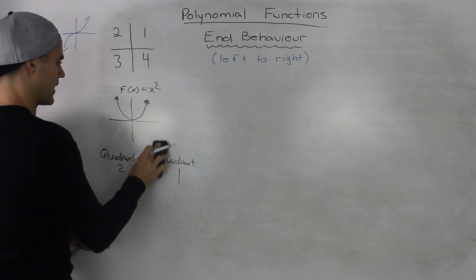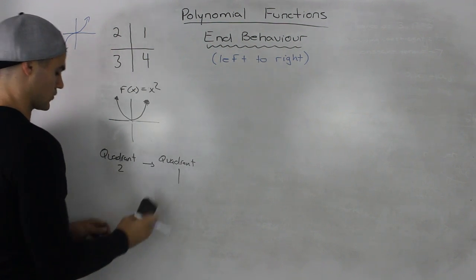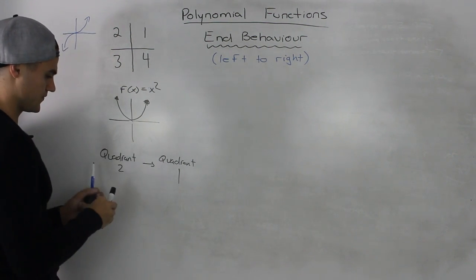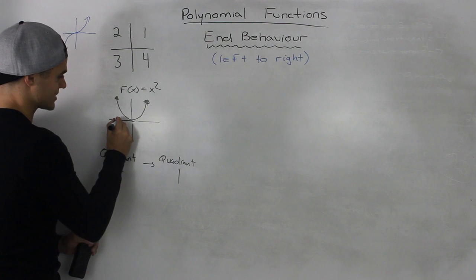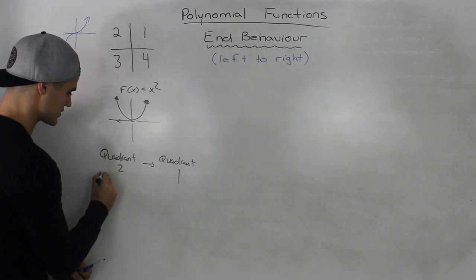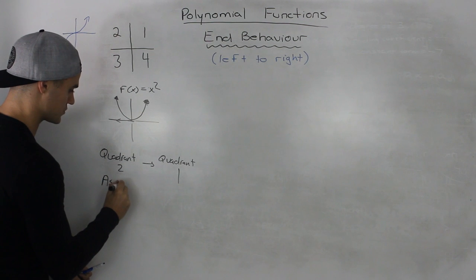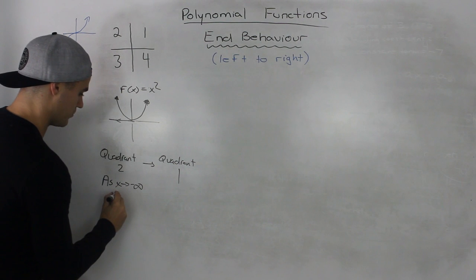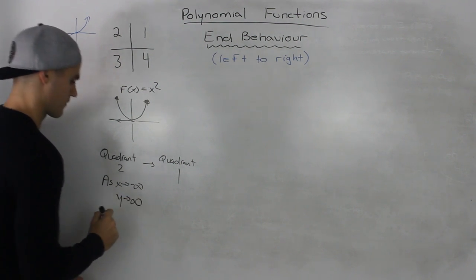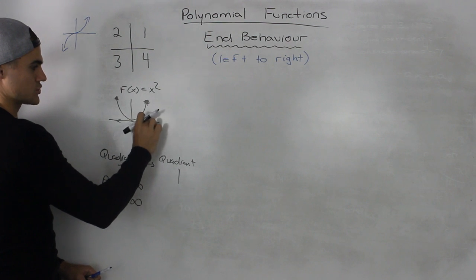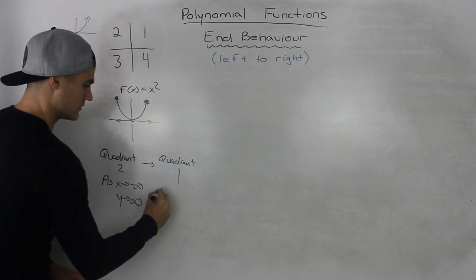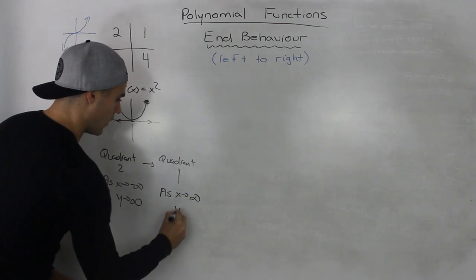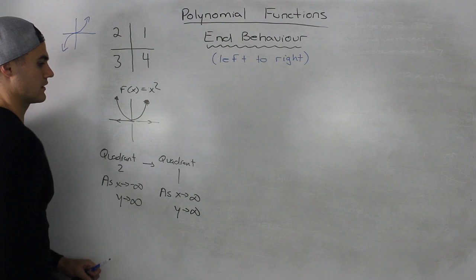Now, another way to describe quadrant 2 to quadrant 1: if it starts in quadrant 2, what that means is as x goes to negative infinity, the y values are going to positive infinity. And for quadrant 1, as x goes to positive infinity, y is going to positive infinity as well.